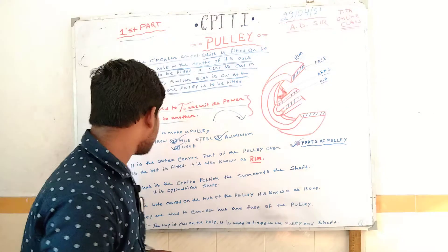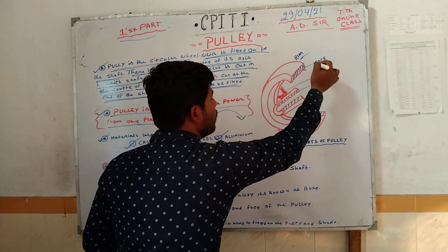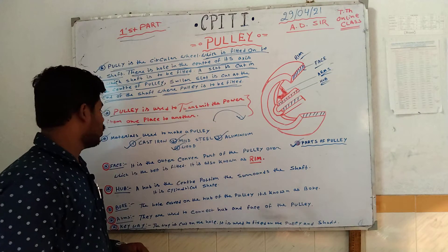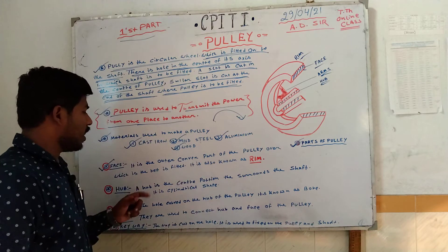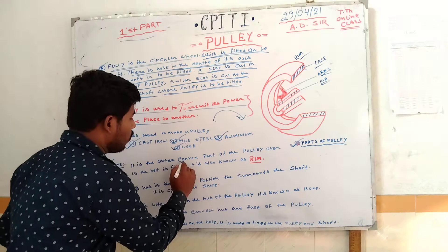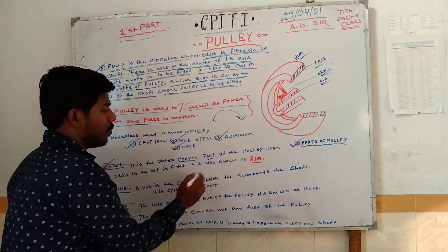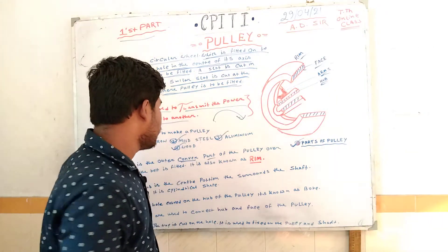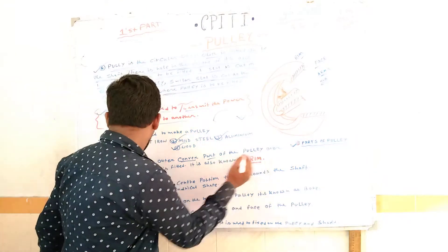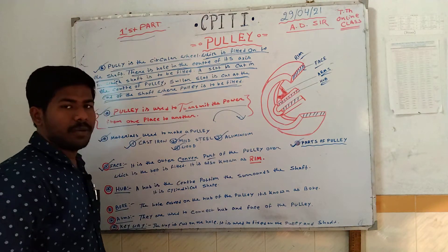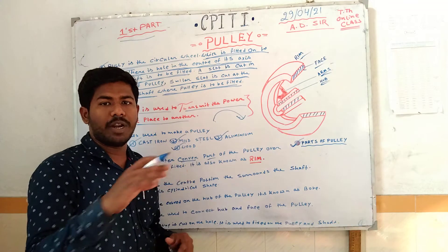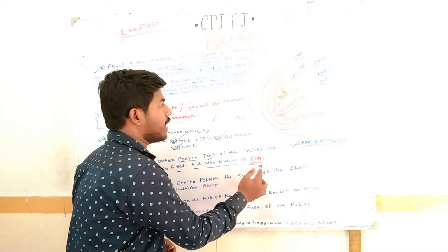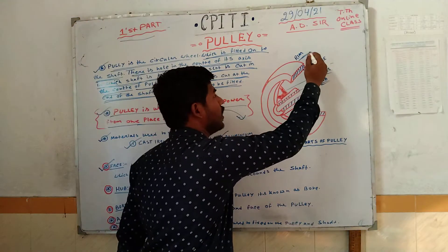Next, we can identify the parts: rim, face, arm, and hub. The face is the outer convex part of the pulley. If you look at the face, it is the outer part of the pulley over which the belt is fitted. It is also known as the rim.